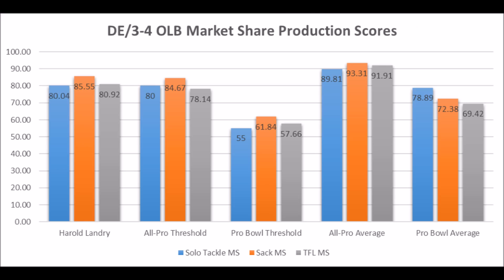When you look at his production data, he had an 80.04 explosive solo tackle market share score, an 85.55 sack score, and an 80.92 tackle-for-loss score. Looking at the data since the 1989 class, he pretty much hits all the thresholds for an all-pro player at the bottom end, but when compared to the average scores of all-pro players, he kind of misses the mark in terms of solo tackle, sack, and TFL data.